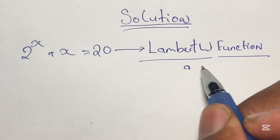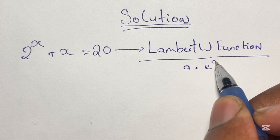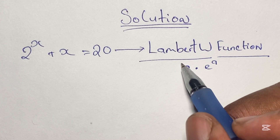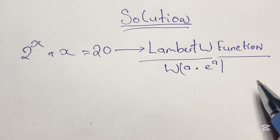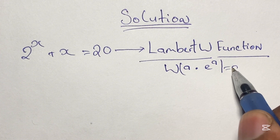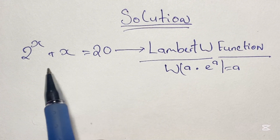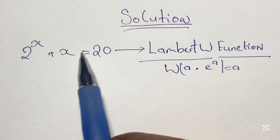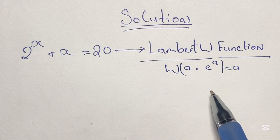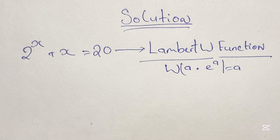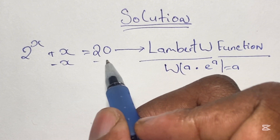How this works is that where we have an expression such as a times e to the power of a, if we apply the W function to this expression the result is a. The idea here is to have our equation rewritten to reflect this expression, so we simplify our equation to reflect this form.